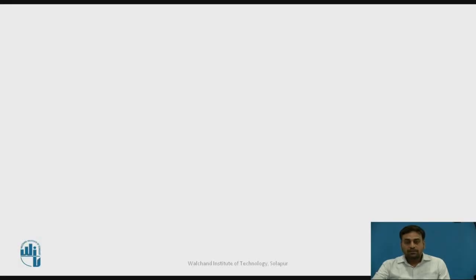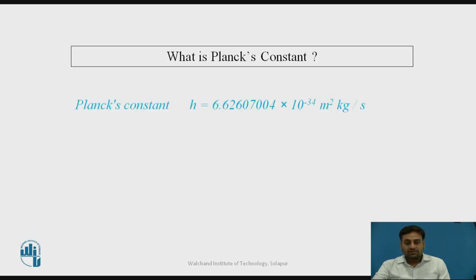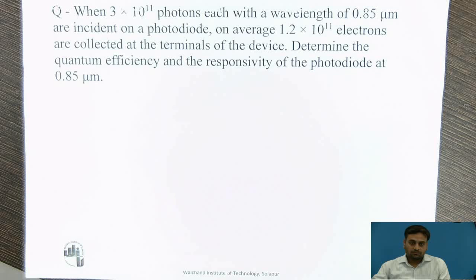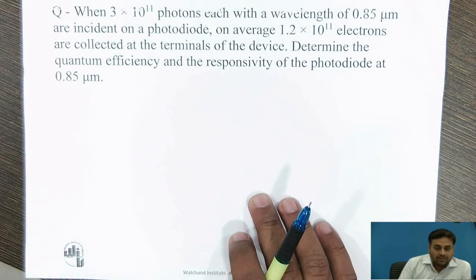What is Planck's constant? Planck's constant is a term used to relate the energy of a photon to its frequency. The value of Planck's constant is denoted by the alphabet h, which equals 6.626 × 10⁻³⁴ meter squared kilogram per second. Today we will see how to solve numericals to find out the performance parameters of a photo detecting material.